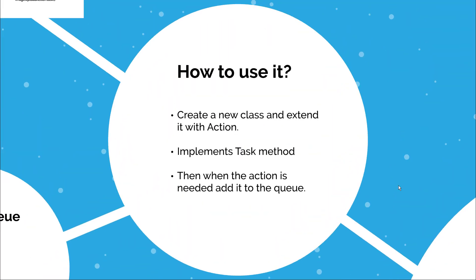So how do you use Actions in Subbot API? It's pretty simple. First, you just need to create a new class and extend it with Action, then just implement the task method. When that is done, you just need to add the action to the queue when you need to use it. That's it. So first, let's see how to implement the task method.